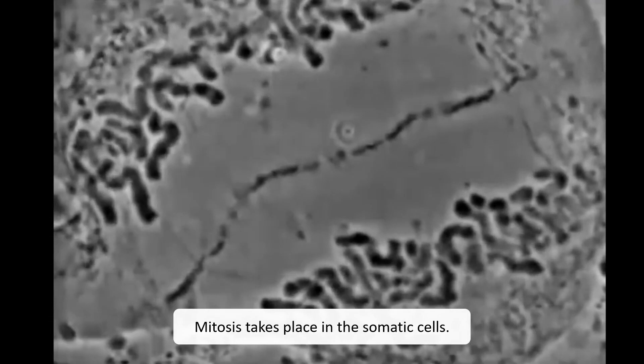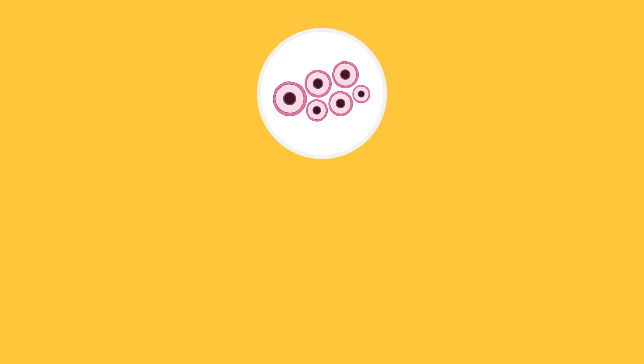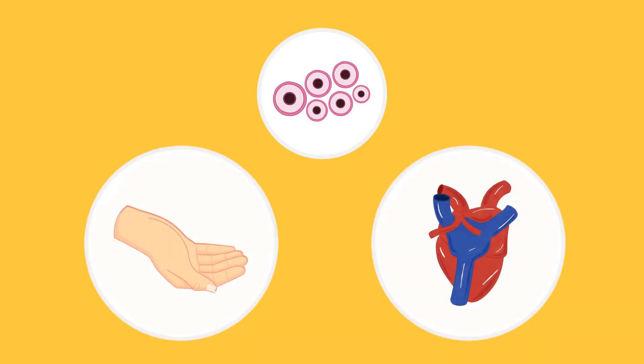Mitosis takes place in the somatic cells of our body, which are the cells that make up different parts of our body like our skin and organs.